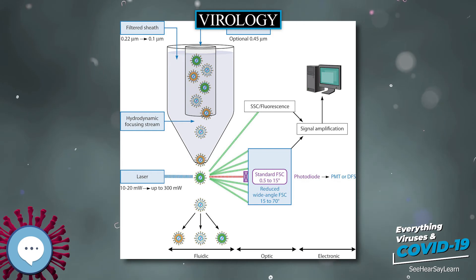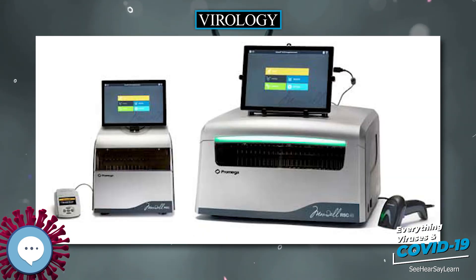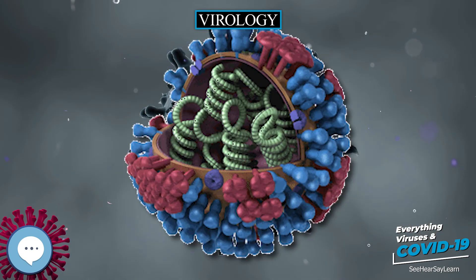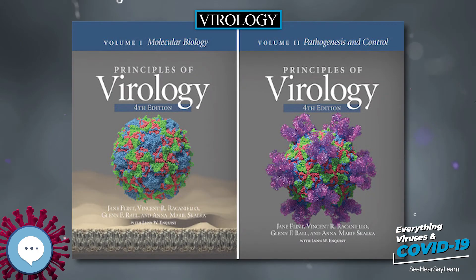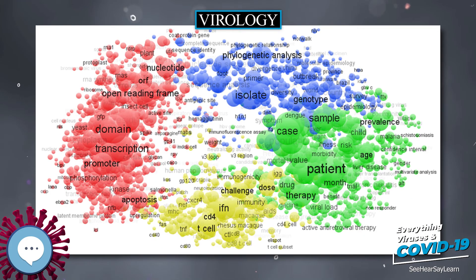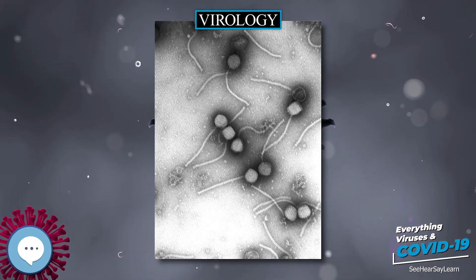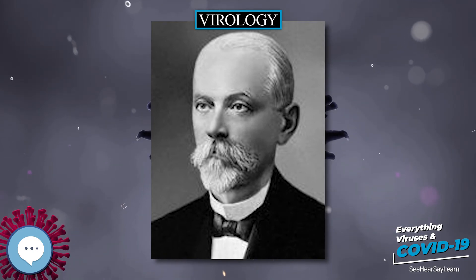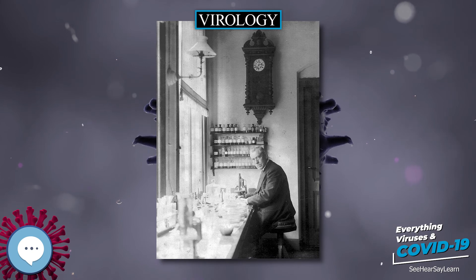The first virus that could be crystallized and whose structure could therefore be elucidated in detail was tobacco mosaic virus (TMV), the virus studied earlier by Ivanovsky and Beijerinck. In 1935, Wendell Stanley achieved its crystallization for electron microscopy and showed that it remains active even after crystallization. Clear X-ray diffraction pictures were obtained by Bernal and Fankuchen in 1941. Based on such pictures, Rosalind Franklin proposed the full structure of tobacco mosaic virus in 1955. Also in 1955, Heinz Fraenkel-Conrat and Robley Williams showed that purified TMV RNA and its capsid protein can self-assemble into functional variants, suggesting that this assembly mechanism is also used within the host cell, as Delbrück had proposed earlier.